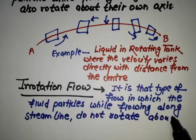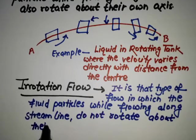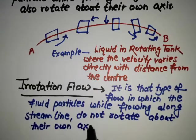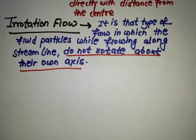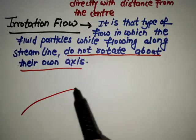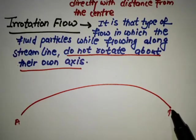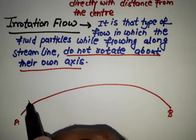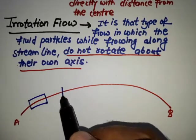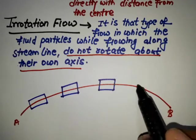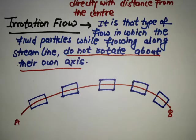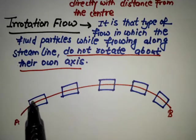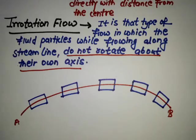About their own axis. This is just opposite of rotational flow - do not rotate about their own axis. So suppose here again we have a streamline that is A B and this is the fluid particle. From the diagram we can say in this flow the fluid particles do not rotate about their own axis.